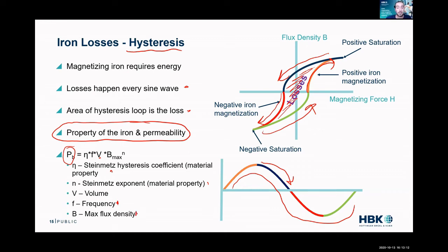And then the flux density, which can be estimated from voltages and currents. So this could be implemented — it's just a matter of getting the right coefficients. We can characterize that and understand those losses in the iron due to the fact that we have to magnetize and demagnetize it regularly.